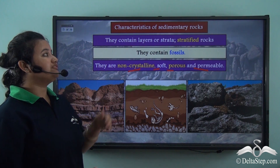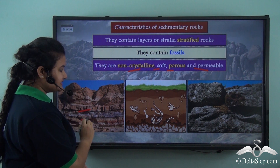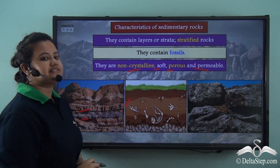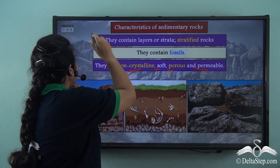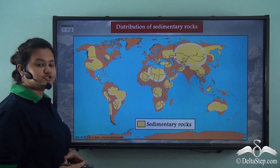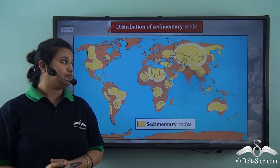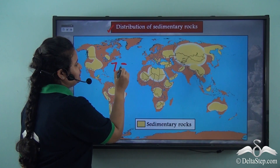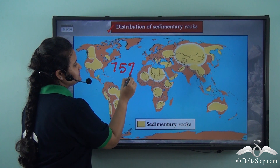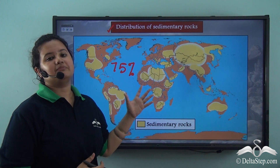Sedimentary rocks contain horizontal layers, they contain fossils, and they are soft, porous, and non-crystalline. This map shows the distribution of sedimentary rocks. We can see that sedimentary rocks are mostly found all over the world — in fact, 75% of the earth's surface is composed of sedimentary rocks.